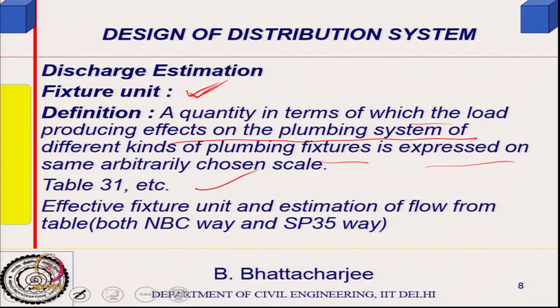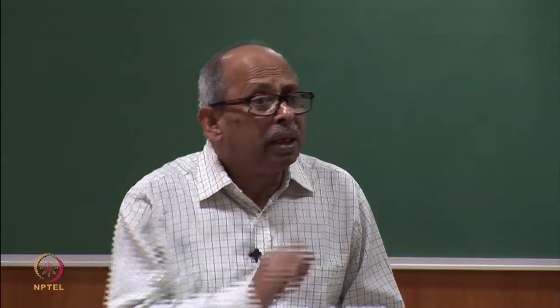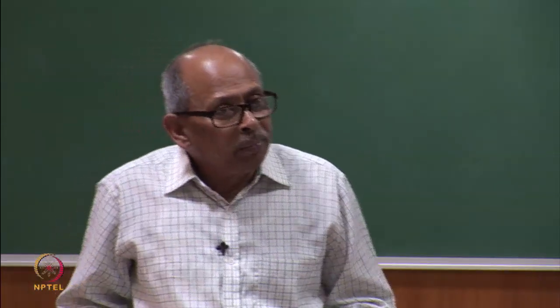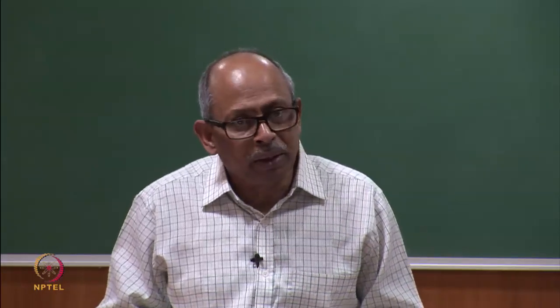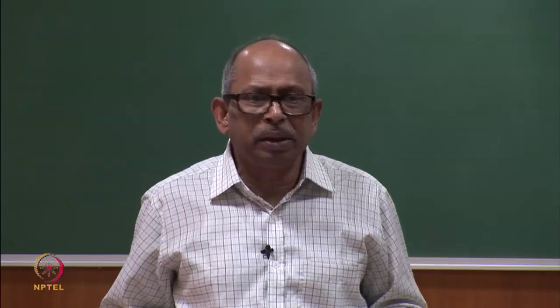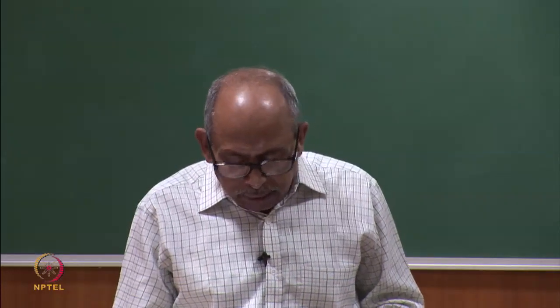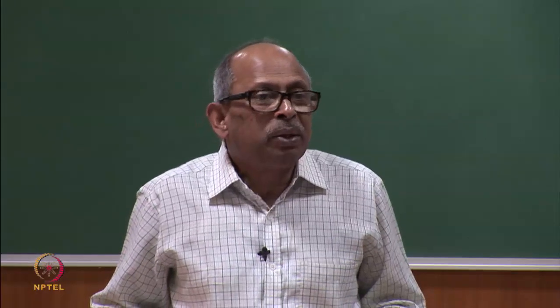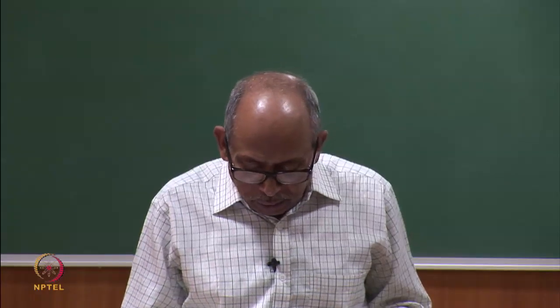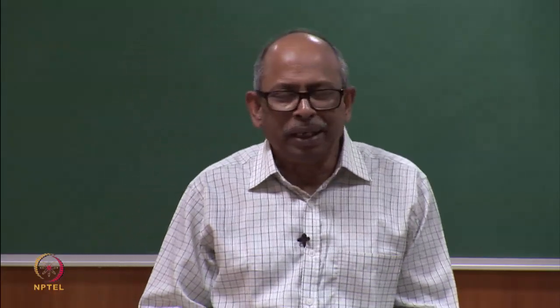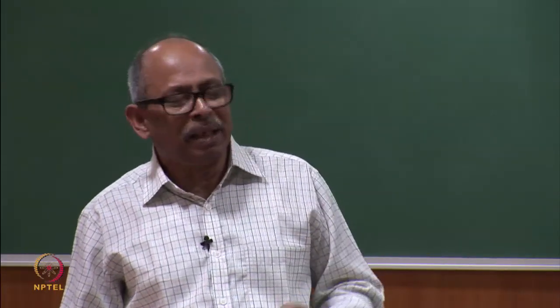For a given floor, knowing how many kitchen taps and bath showers there are, the total number of fixture units can be summed up. Each fixture unit's corresponding flow has been estimated from engineering practice. However, you do not take all the fixture units into your design because of diversity — you take something called effective fixture units, and these values are given in another table in SP 35.